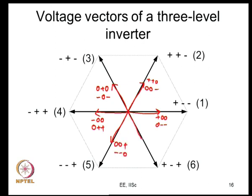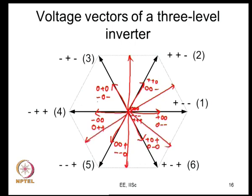The special vectors unique to the three-level inverter are those with intermediate levels, such as plus-0-minus, 0-plus-minus, minus-plus-0, minus-0-plus, and 0-minus-plus. The null vector is produced by 0-0-0, minus-minus-minus, and plus-plus-plus. If you know the voltage vectors for a two-level inverter, extending to a three-level inverter is quite easy — this is how the vectors are, and it is fairly simple.